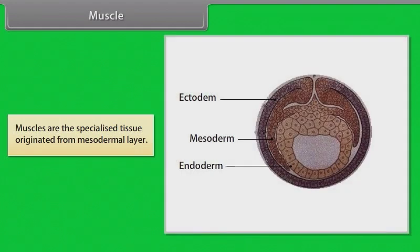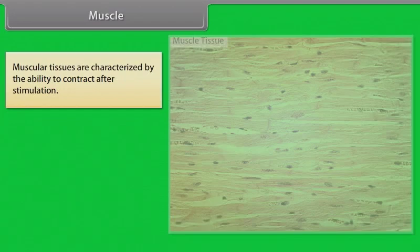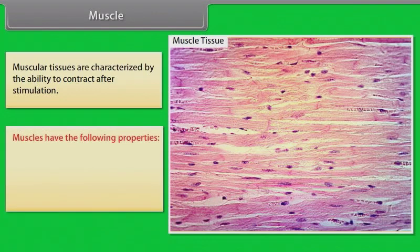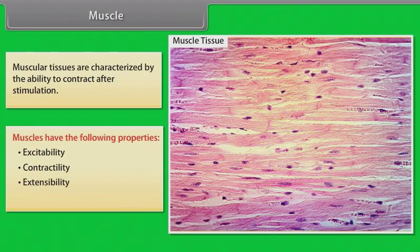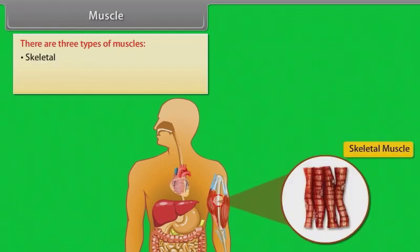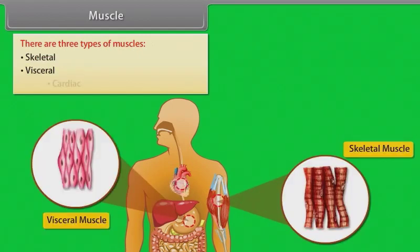Muscles are the specialized tissues originated from the mesodermal layer. Muscular tissues are characterized by the ability to contract after stimulation. Muscles have the following properties: excitability, contractility, extensibility, and elasticity. There are three types of muscles: skeletal, visceral, and cardiac.